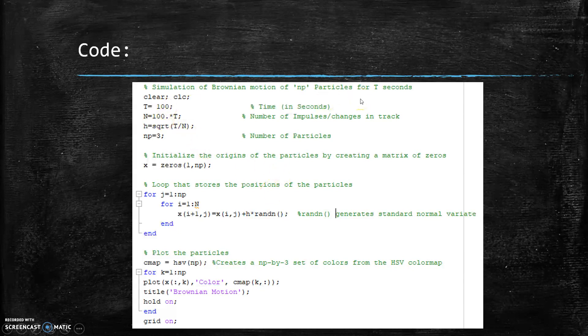T, which is time in seconds, we've got that set to 100. We have our number of impulses or the changes in track, and you can see that as 100 times T. And then we've got H, which is the square root of the time over N. And then our number of particles, which we're going to do is 3.